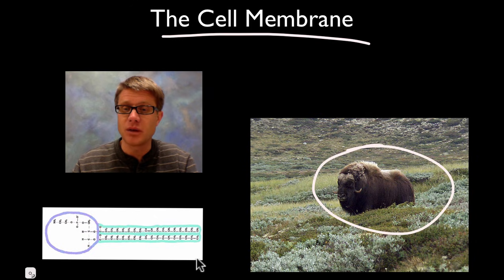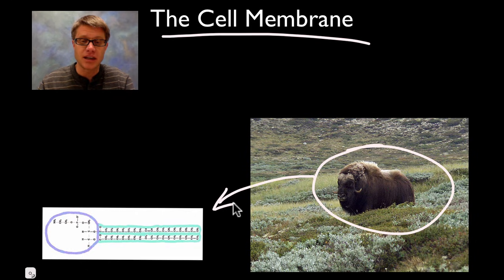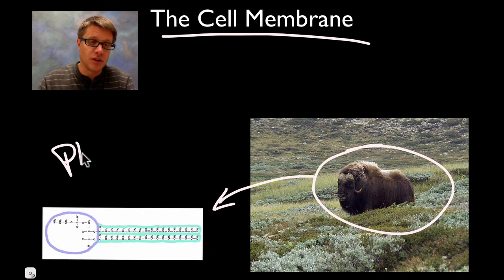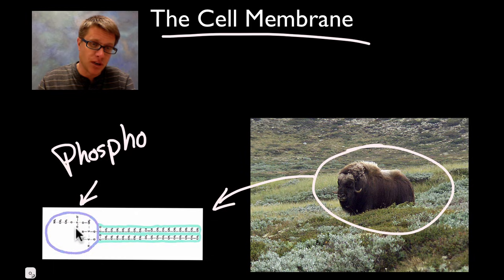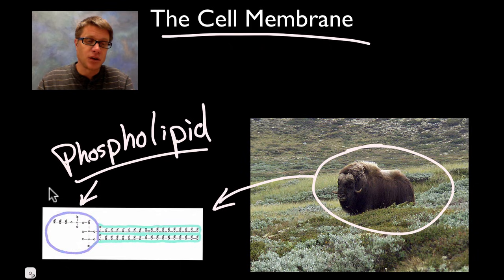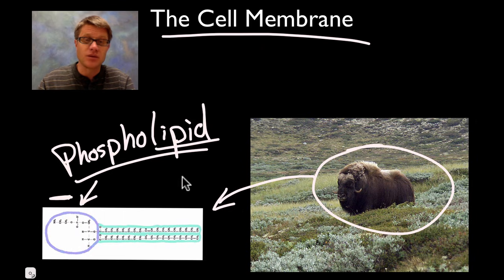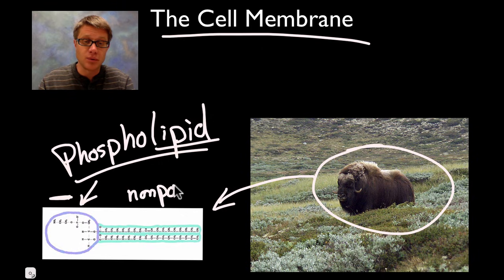You may ask yourself, why do you have a picture of a muskox here? Well, when I talk about the cell membrane I like to talk about the muskox and how it's a whole lot like this over here. This thing is called a phospholipid. It's called a phospholipid because we have a phosphate group right up here in the head. The phospholipid basically has two parts: up here it's going to have a charged part — a negative charge. And then the tail end, the lipid part, that's a fat part — since it has so much carbon with hydrogen around the outside — it's non-polar. This whole rear end is going to be non-polar.